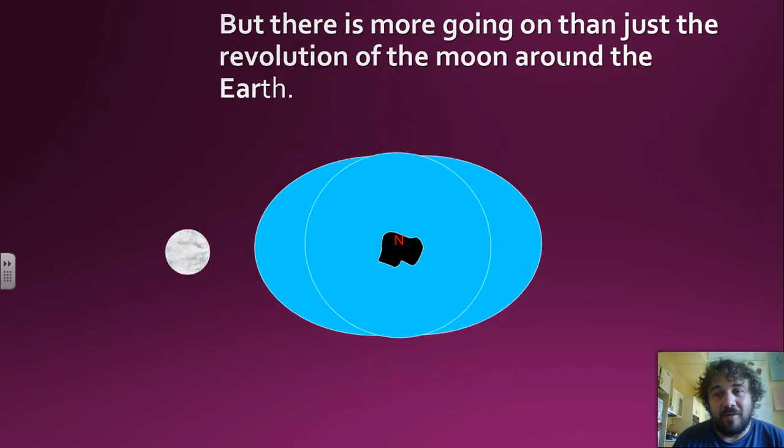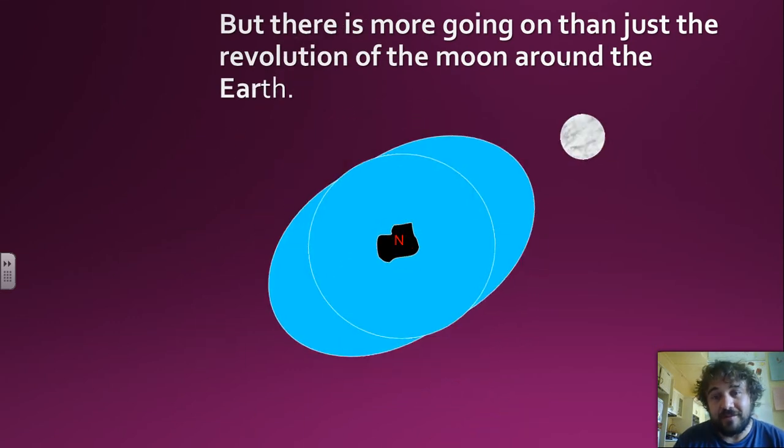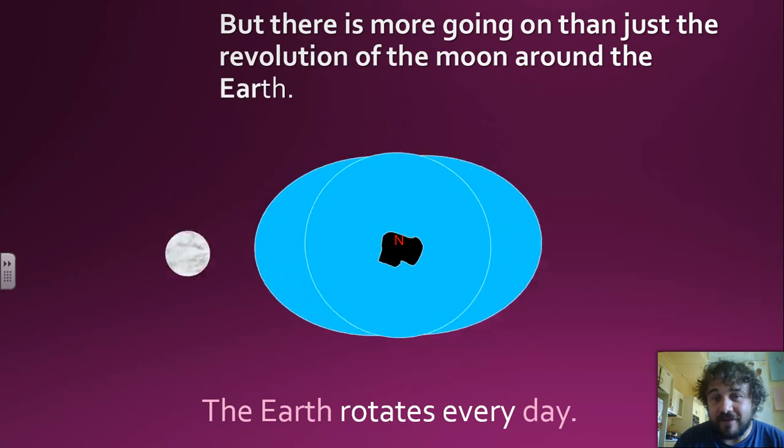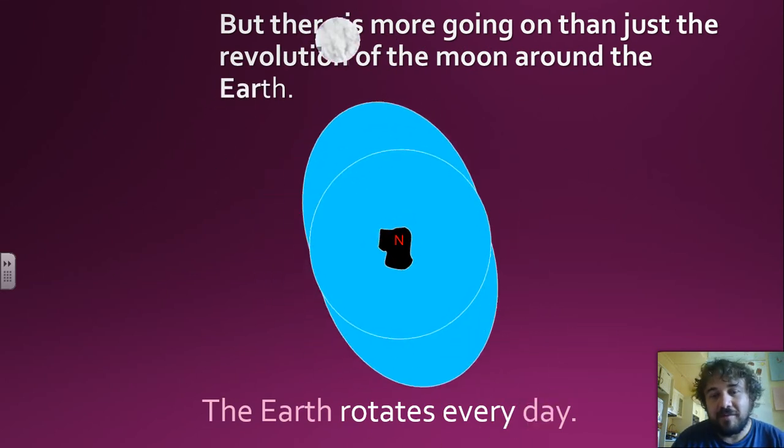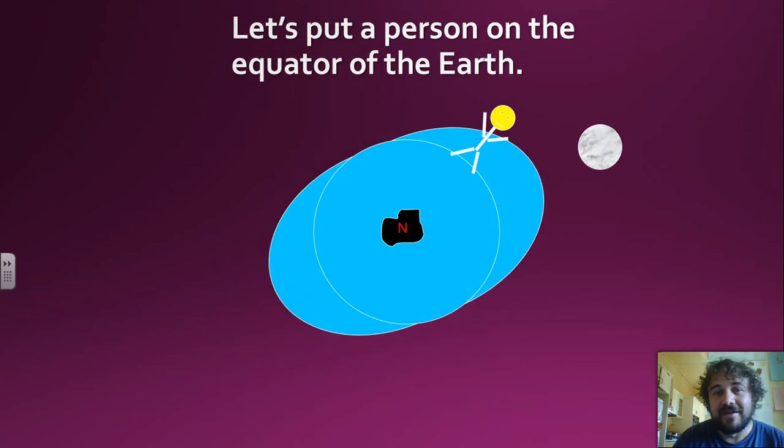So there's more than just the revolution of the Moon, because the Earth itself is rotating. So the Moon spins around the Earth—that's cool. But the Earth itself is rotating. So let's put a person on the equator, that's the line that goes around the middle.